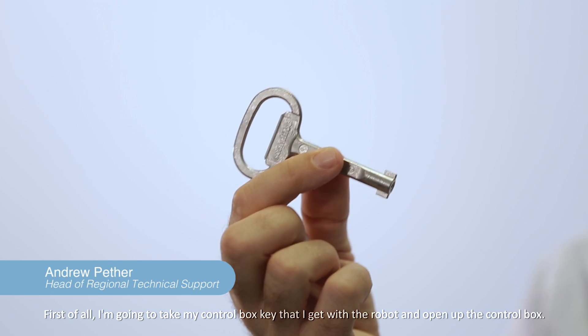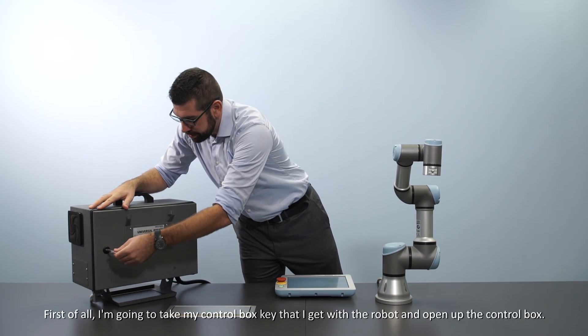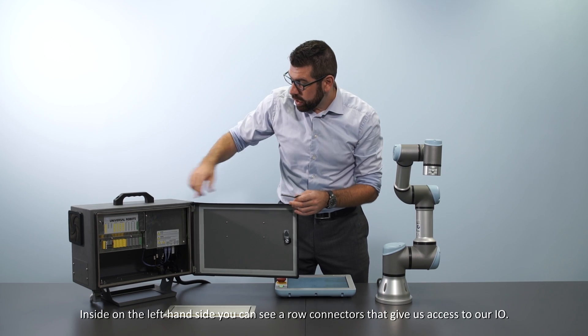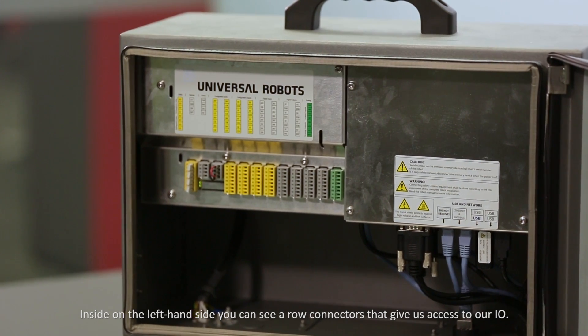First of all I'm going to take my control box key that I get with the robot and open up the control box. Now inside on the left hand side you can see a row of connectors that give us access to our I.O.